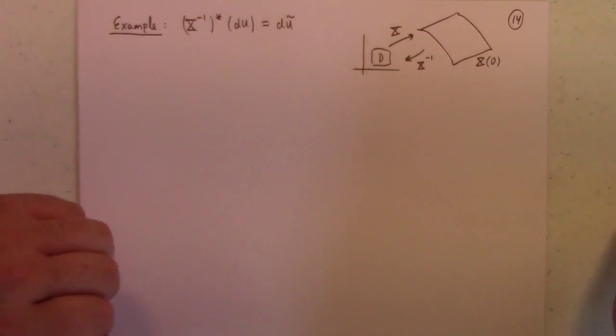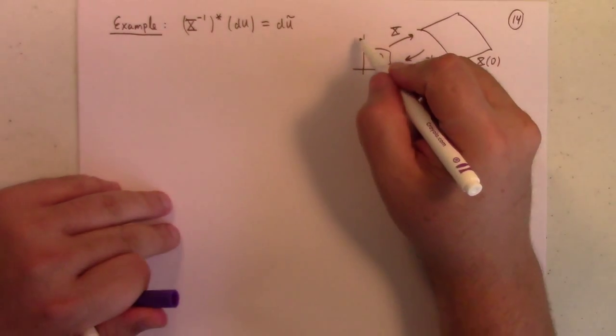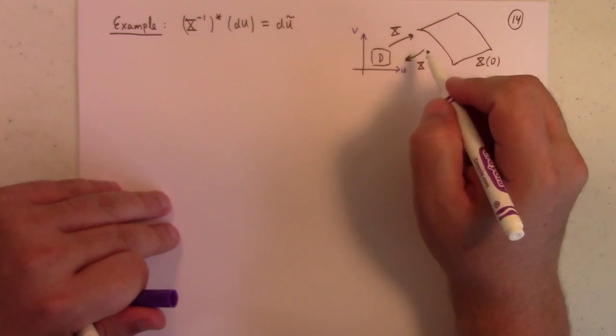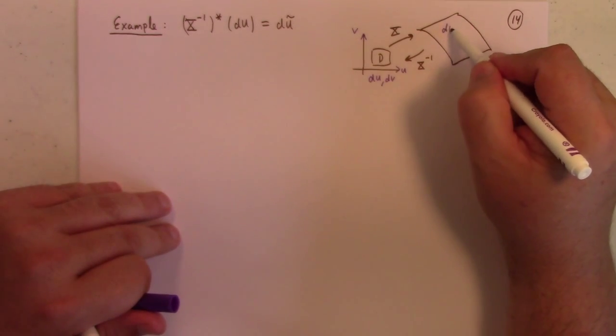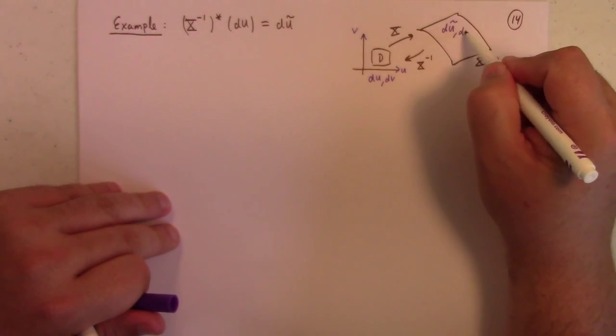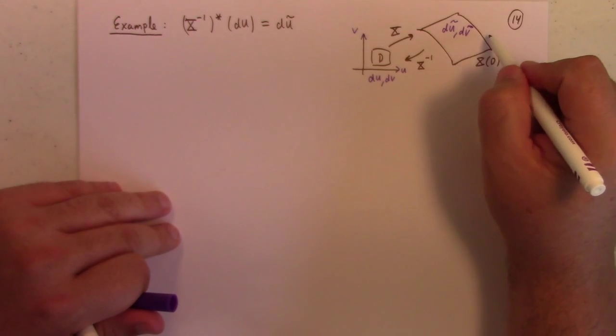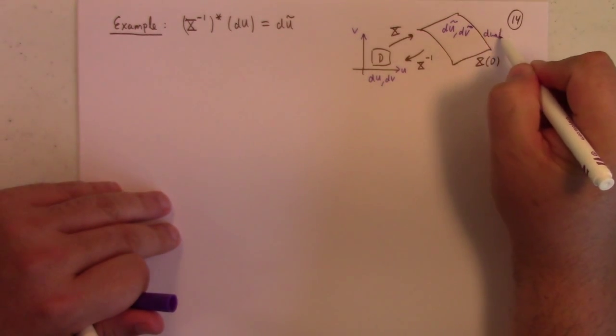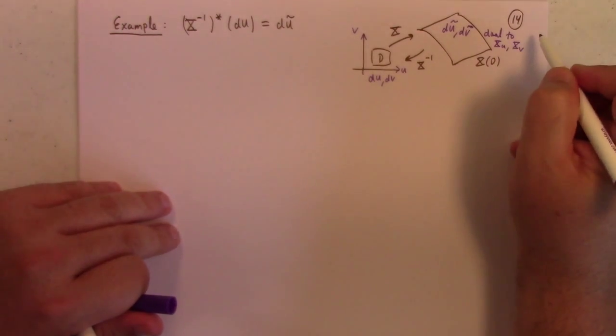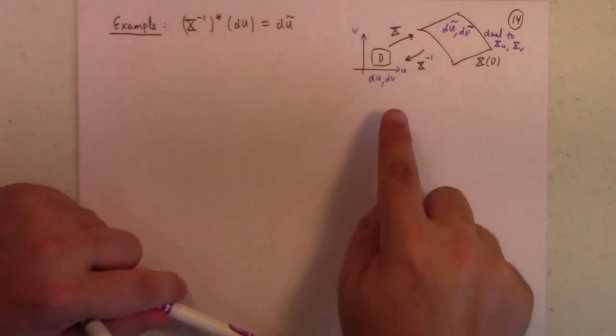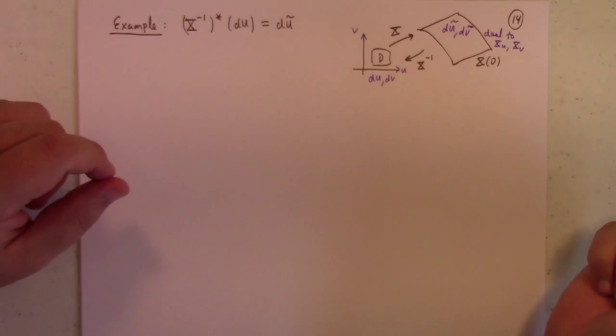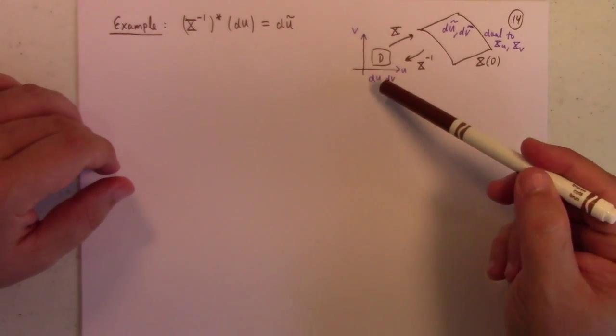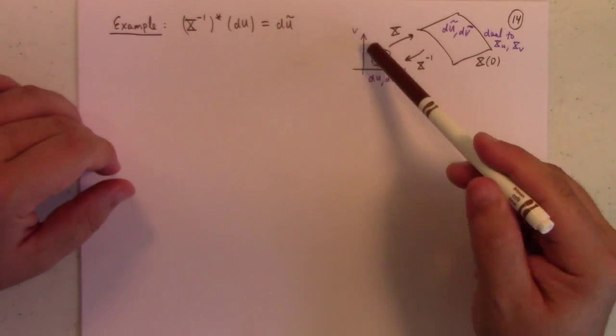So here, just to remind you guys, here's my domain d, here's my surface, x goes this way, the chart goes that way, and we'll just think of it as a simple surface, let this be x of d. And so what I'm saying is, of course, du, this is v, this is u, so down here you've got du and dv, that's their home.